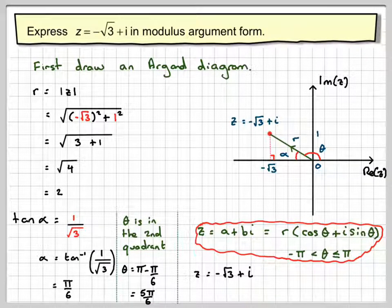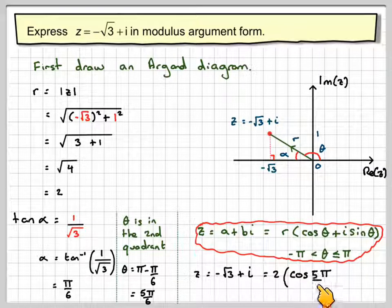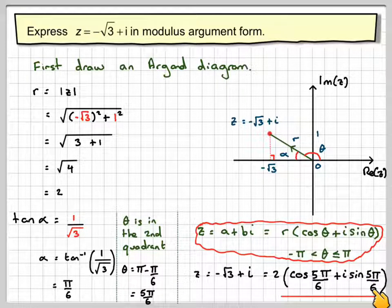Z, minus root 3 plus i, will be equal to 2 cos of 5 pi by 6 plus i sine 5 pi by 6.